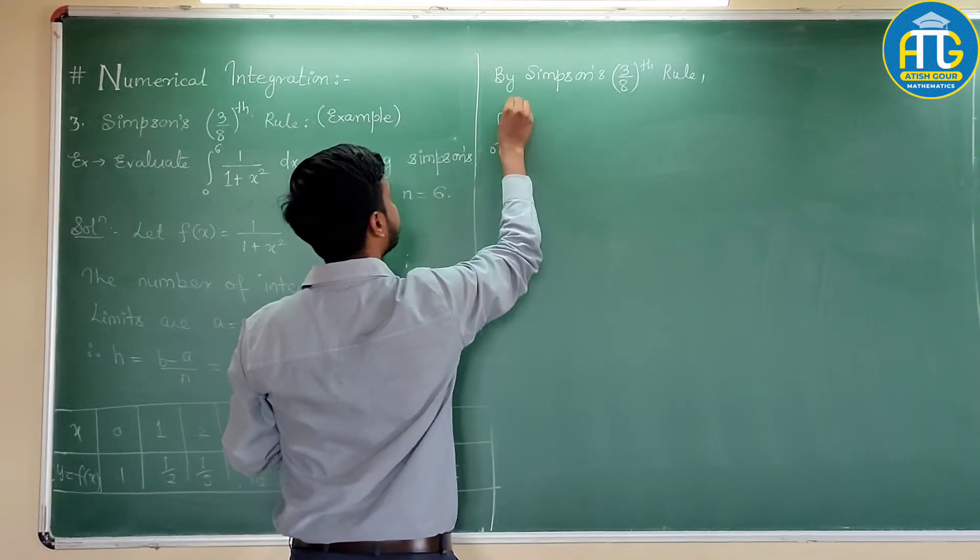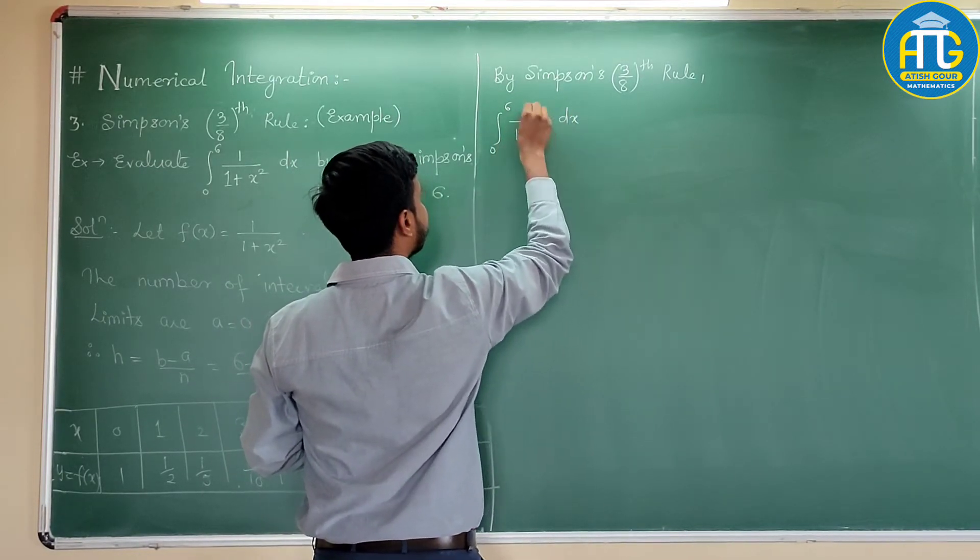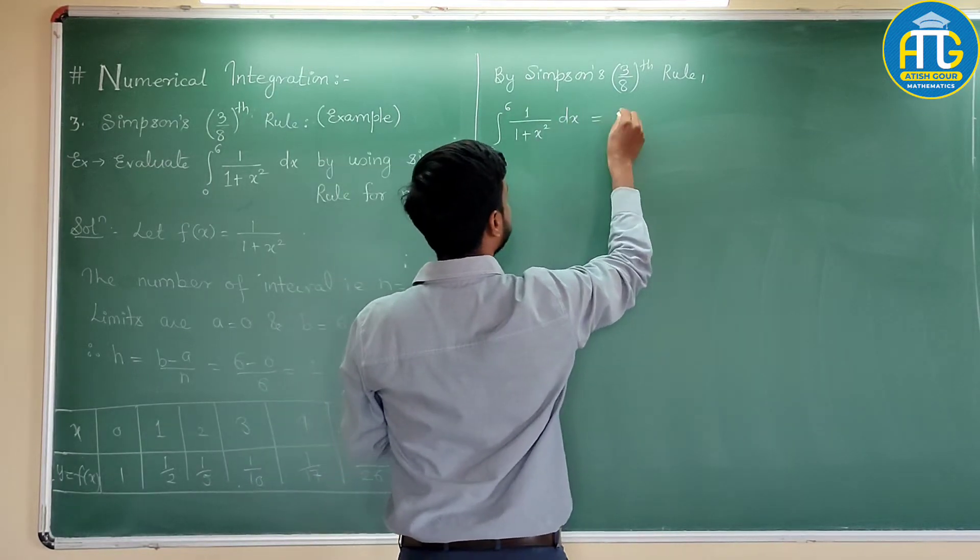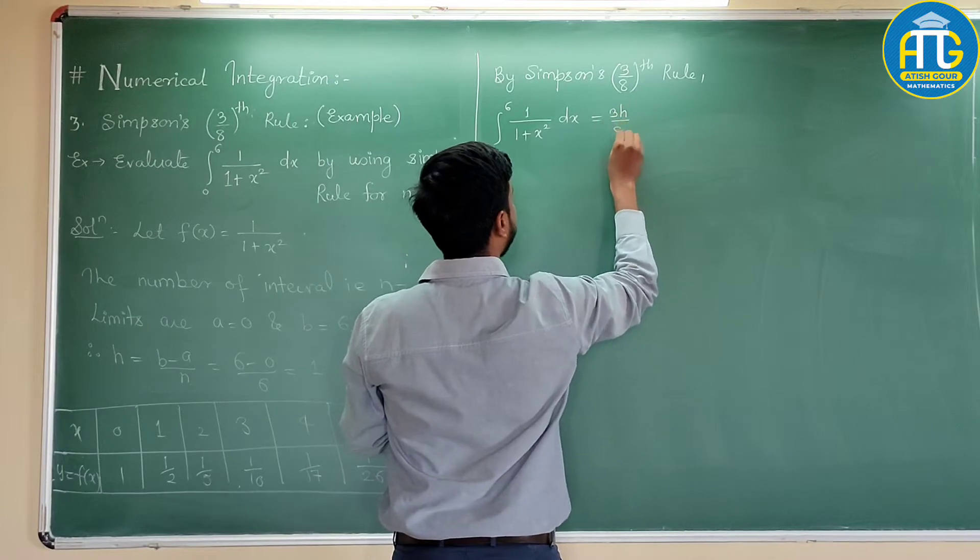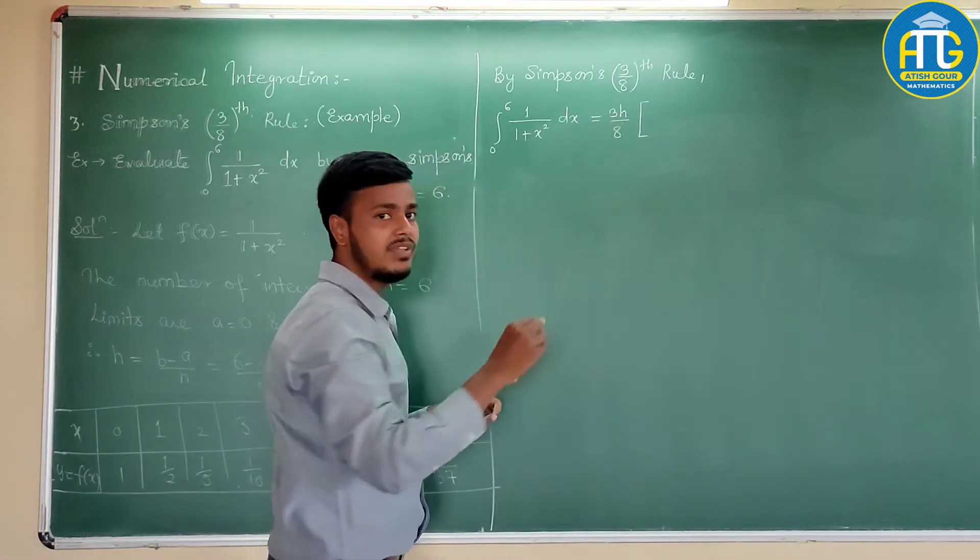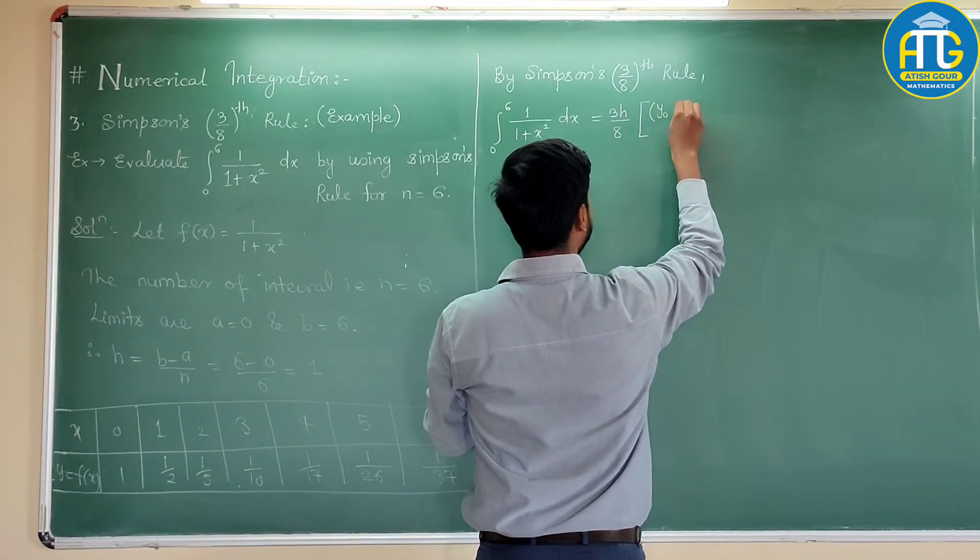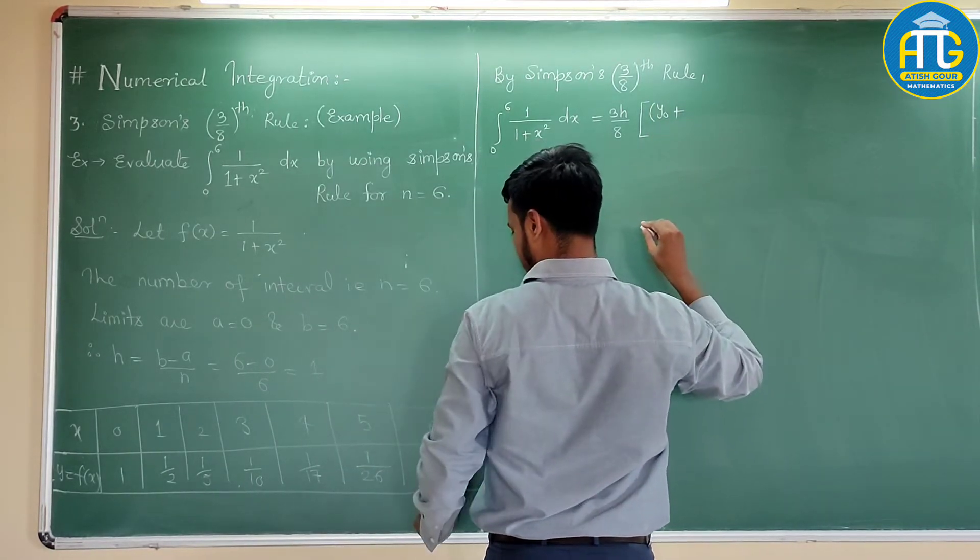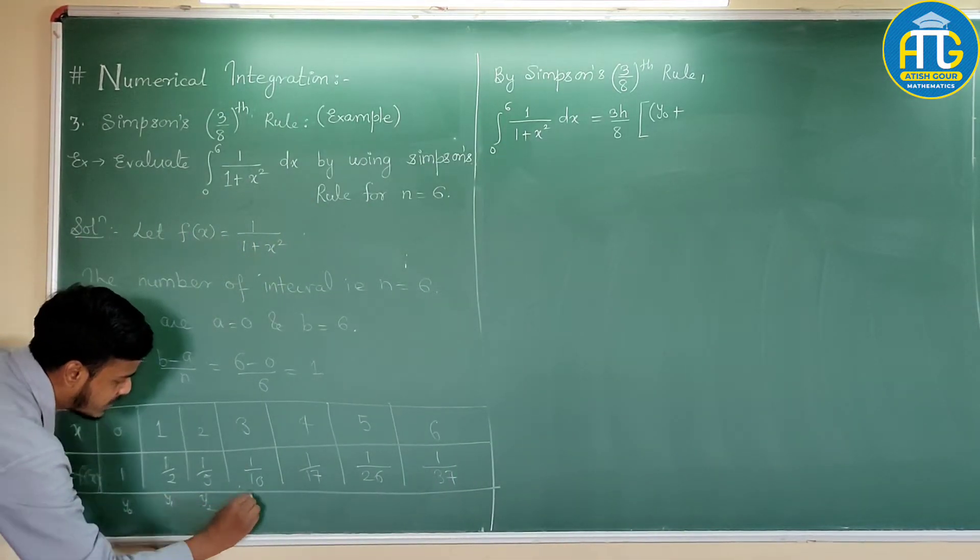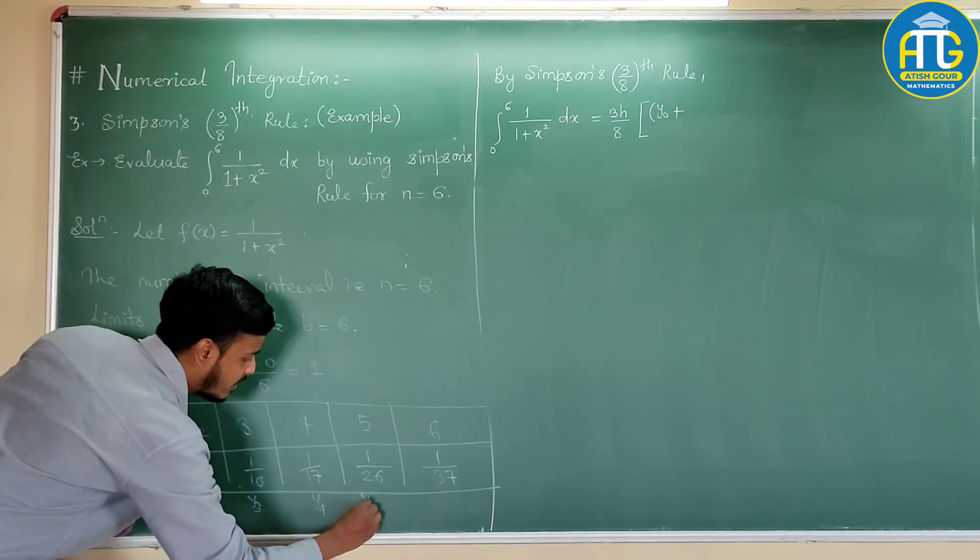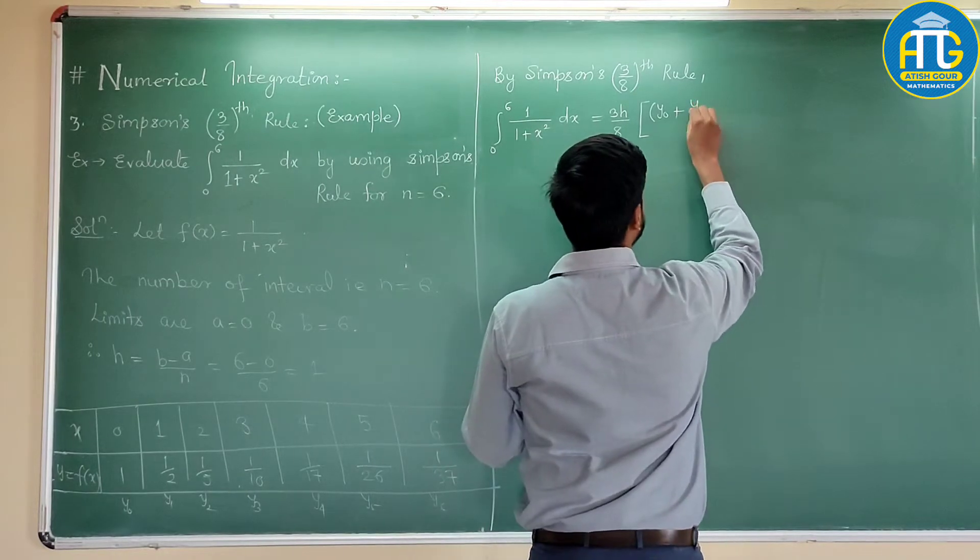Integration from 0 to 6, 1 upon 1 plus x squared dx equals 3h by 8, in bracket we have the term of y0 and yn. Here it would be y0 and yn would be y6. We forgot to name them y0, y1, y2, y3, y4, y5, and y6.